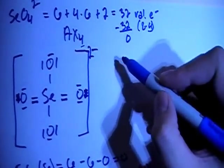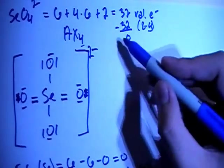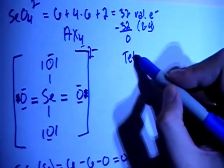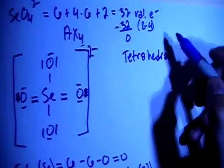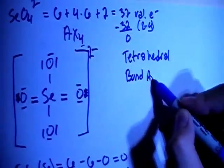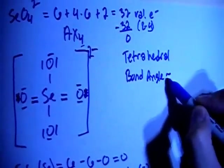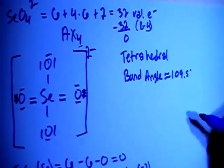So let's go ahead and talk about the shape now. AX4, four surrounding atoms, no non-bonding pairs on the central atom means a tetrahedral shape. And with a tetrahedral shape, the bond angle is going to be approximately 109.5 degrees.